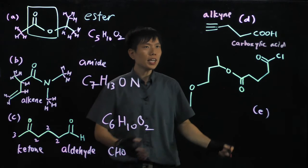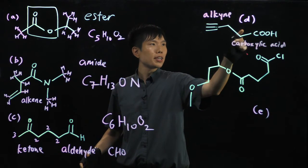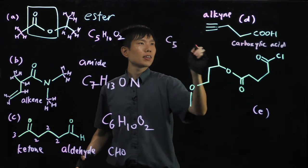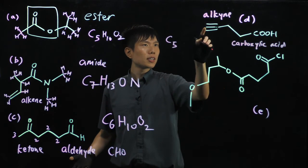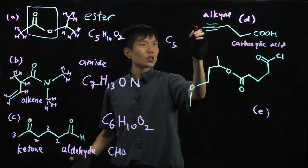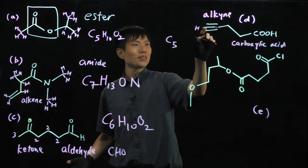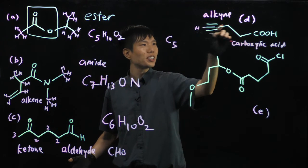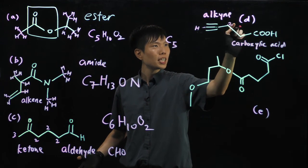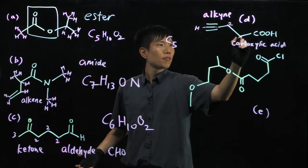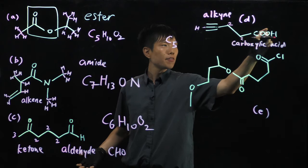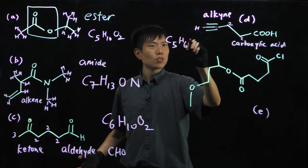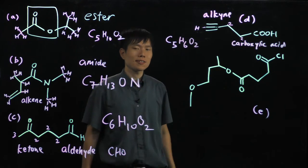Formula: 1, 2, 3, 4, 5 — C5. Hydrogen: there's 1 here. Don't forget, carbon has 4 bonds, so 1 invisible. Counting gives us 6 — H6. And 2 oxygens. So the molecular formula for molecule D is C5H6O2.